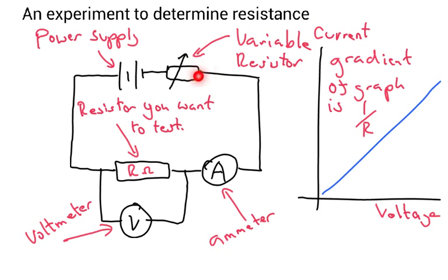The reason you need a variable resistor is so you can vary the amount of voltage across your test resistor. Then you have an ammeter, which you're going to use to measure the current. Note, it is in series with your circuit, whereas the voltmeter is measuring the voltage across your test resistor.